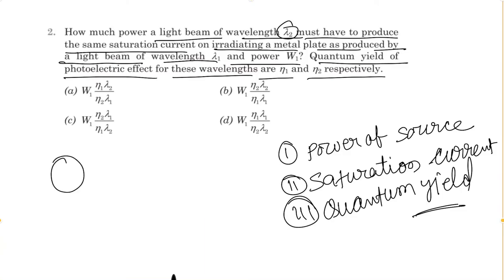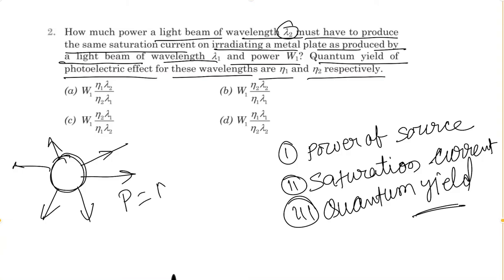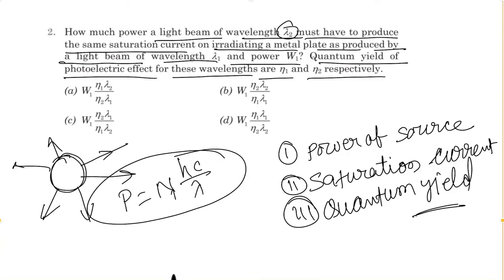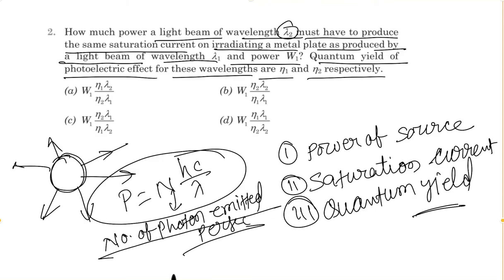First, I am going to explain the first term — power of source. Suppose this is a monochromatic light source which produces photons of a single wavelength. If N is the number of photons emitted per second, then the power of the source is equal to N·hc/λ, where N is the number of photons emitted per second and P is the power of the source.